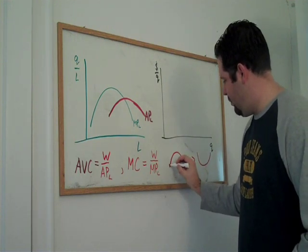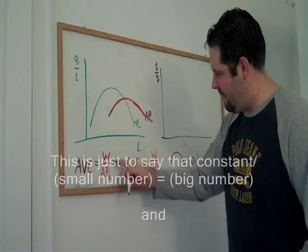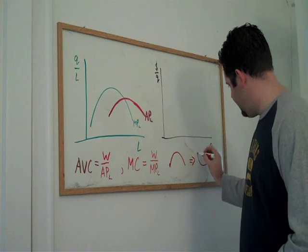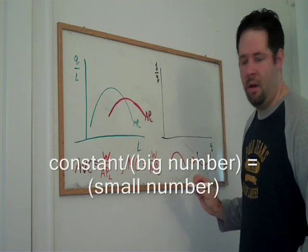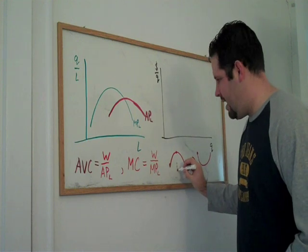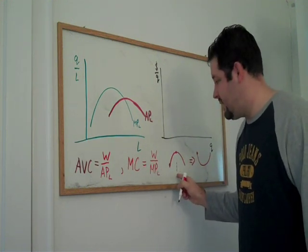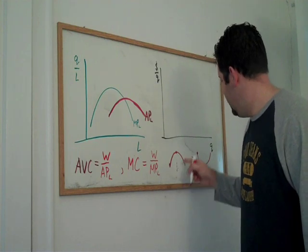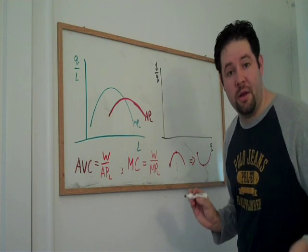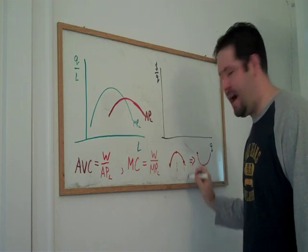When we have a low labor input and divide that into the wage, that gives us a relatively high number. When we have an intermediate labor input giving us a high average product or marginal product, that gives us a low number because we're dividing by a bigger number.